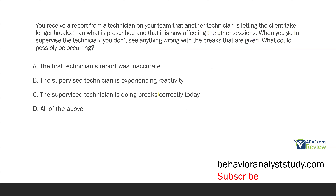You receive a report from a technician on your team that another technician is letting the client take longer breaks than what is prescribed, and that it is now affecting other sessions. When you go to supervise that technician, you don't see anything wrong with the breaks given. What could possibly be occurring? This is a very good applied question — as an analyst, personnel management is one of your main roles, especially when managing a team of technicians. When your technicians are reporting things to you, you've got to engage in philosophical doubt.